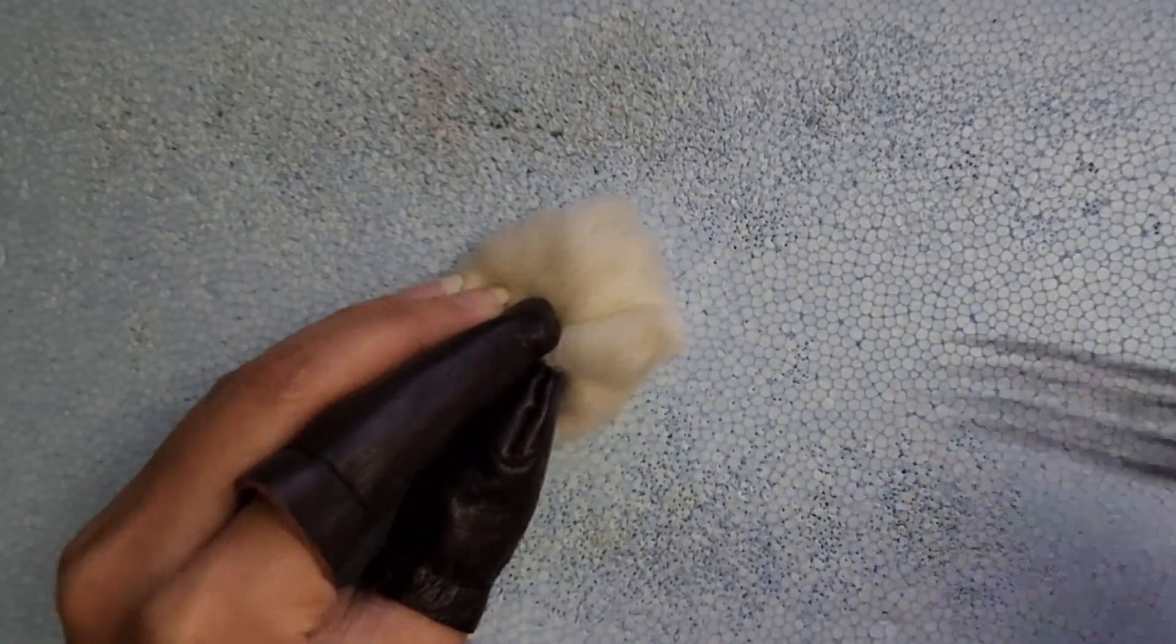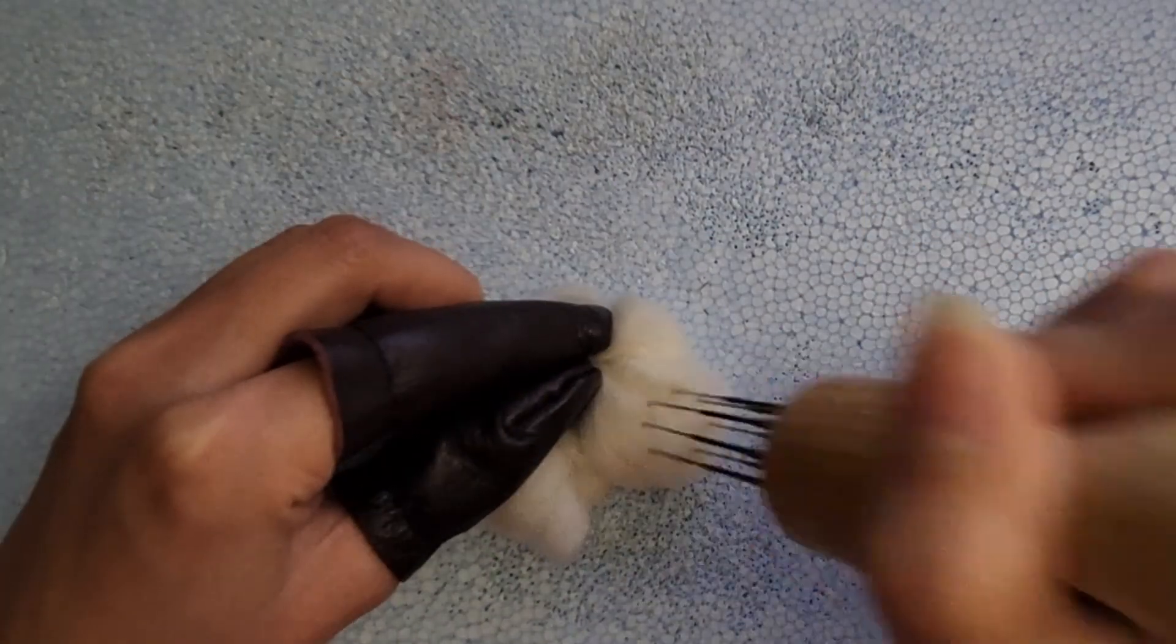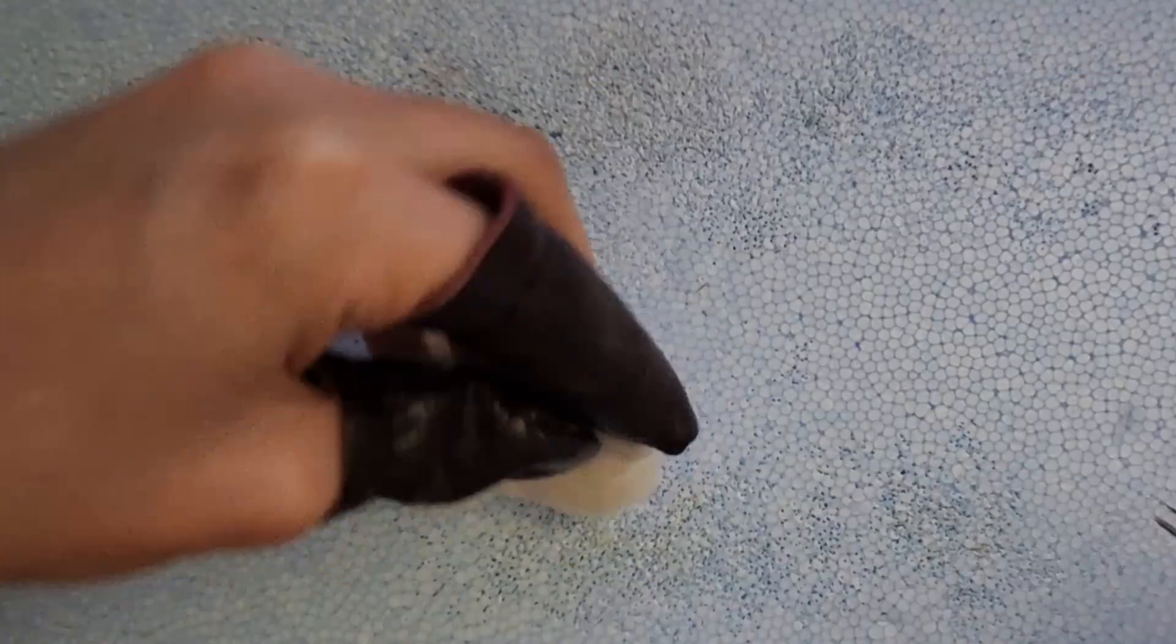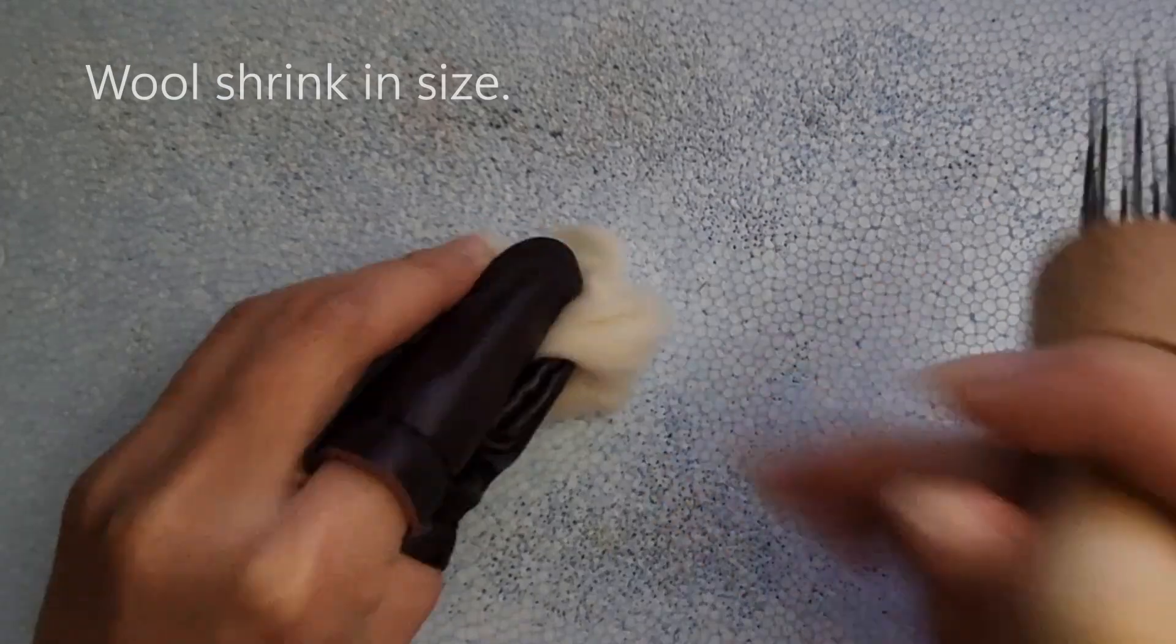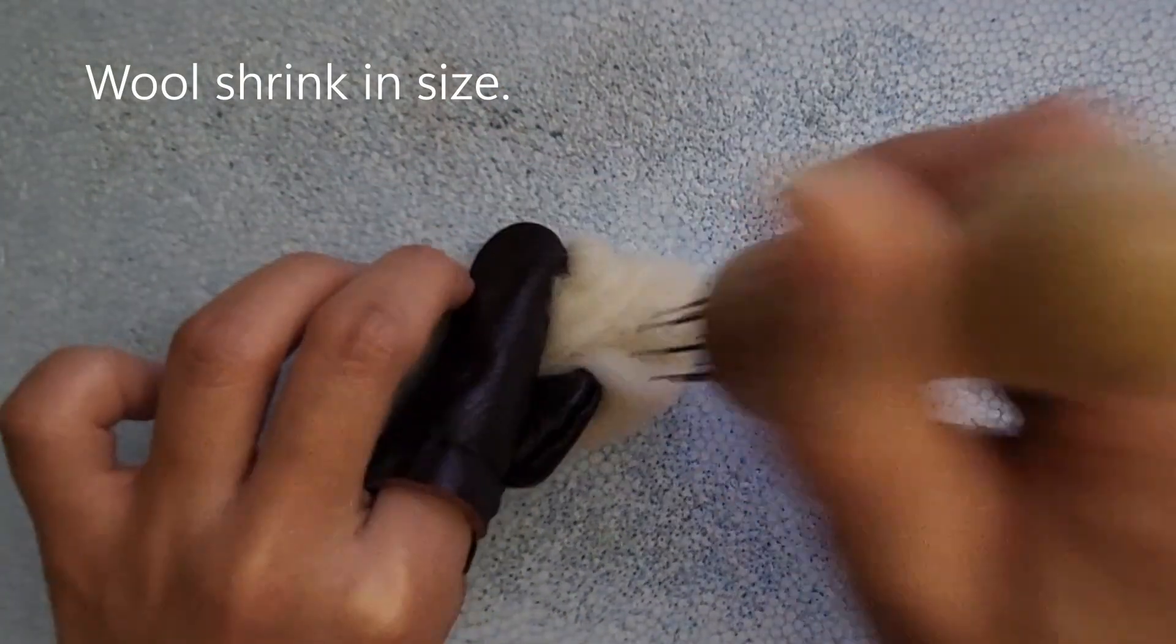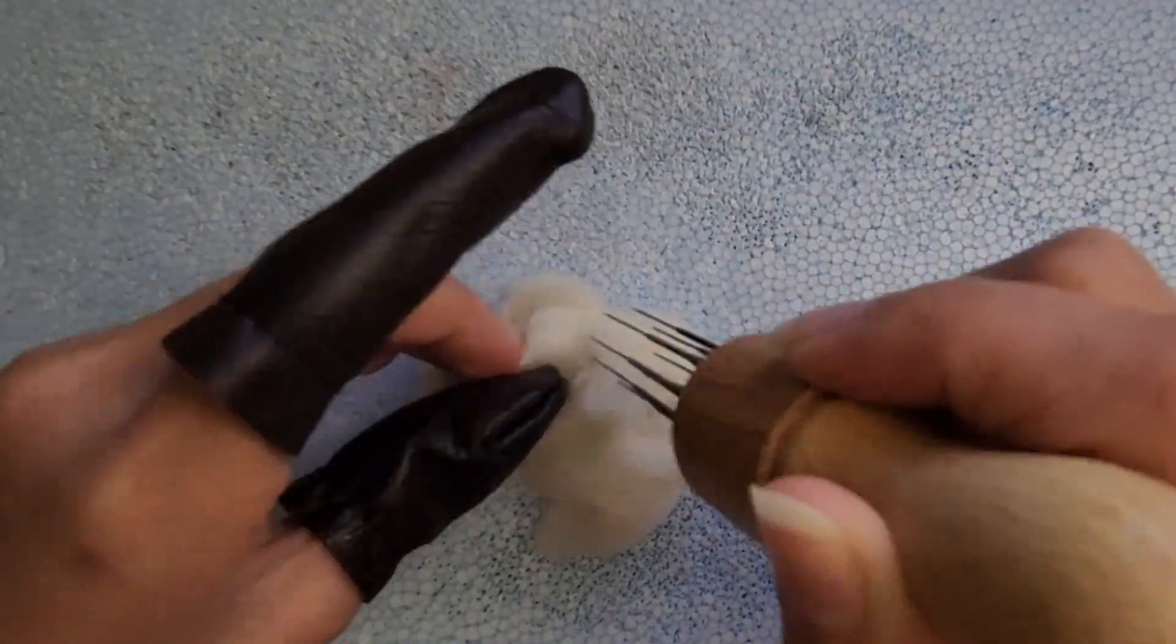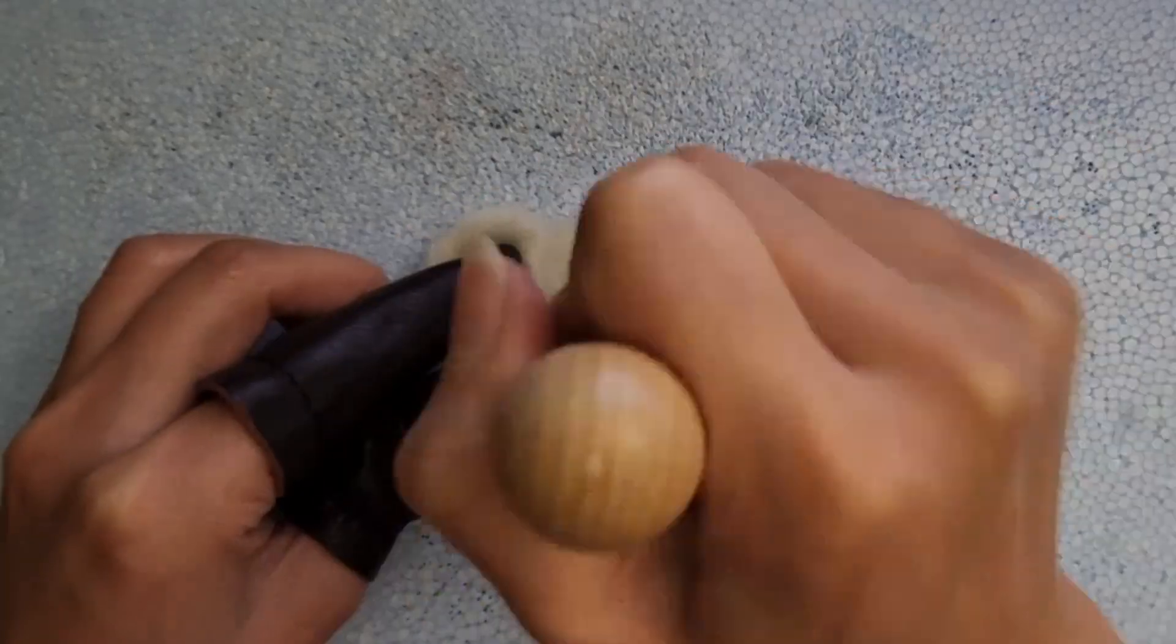If you want to use a bigger one with more needles, make sure you're wearing finger guards because those take more effort to felt. You want to keep in mind that the wool will shrink in size, so you should get a bit more wool than what it initially looks like before felting.